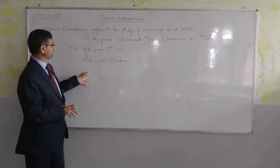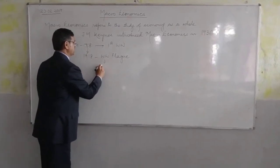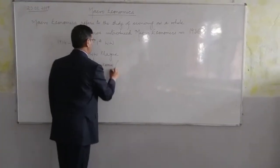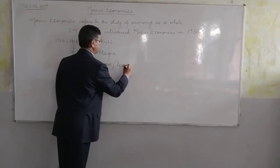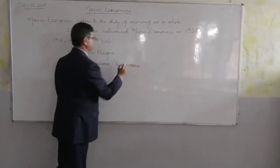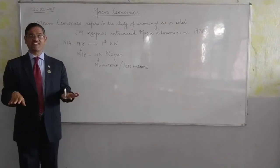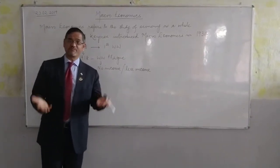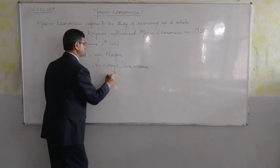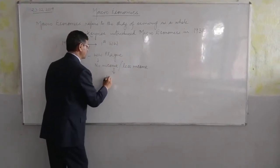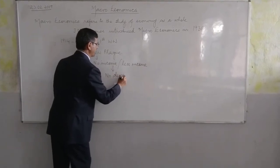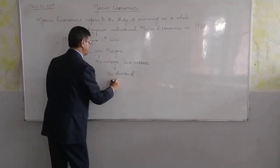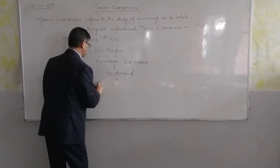As a result, there was no income — or very little income. Income had reduced. When income is less and there are fewer commodities available, there was no demand either, because people didn't have the money to buy goods. Demand had gone down, and as a result, there was a depression all over the world.